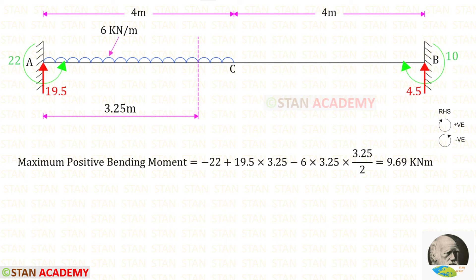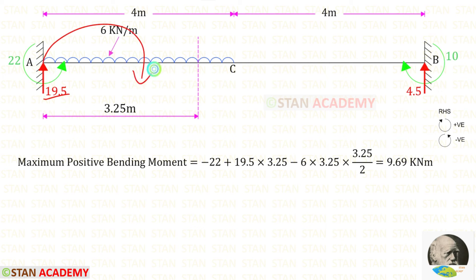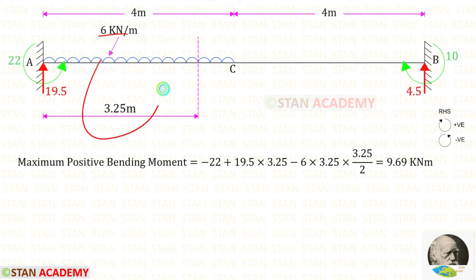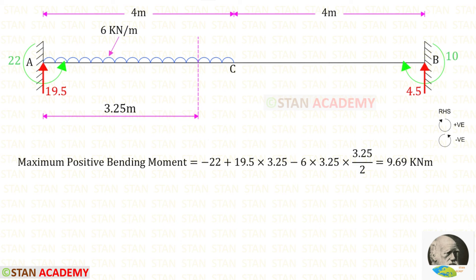Now let us find the maximum positive bending moment. MA acts in the anticlockwise direction so it is negative. The vertical reaction RA acts clockwise, so it is positive at distance 3.25 m. The UDL acts anticlockwise so it is negative; for the UDL we multiply by the distance and distance divided by 2. Finally, the maximum positive bending moment is 9.69 kNm.